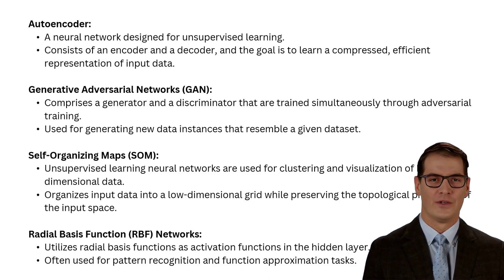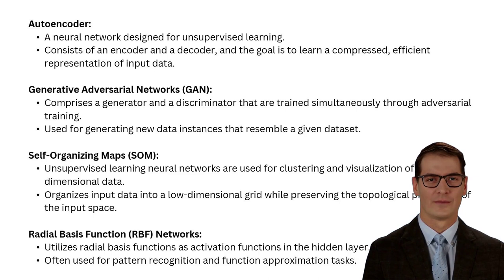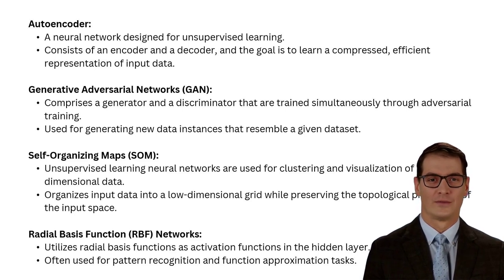Artificial neural networks use interconnected neurons to simulate the behavior of the human brain and solve complex problems. Autoencoders are neural networks specifically designed for unsupervised learning, consisting of an encoder and a decoder.